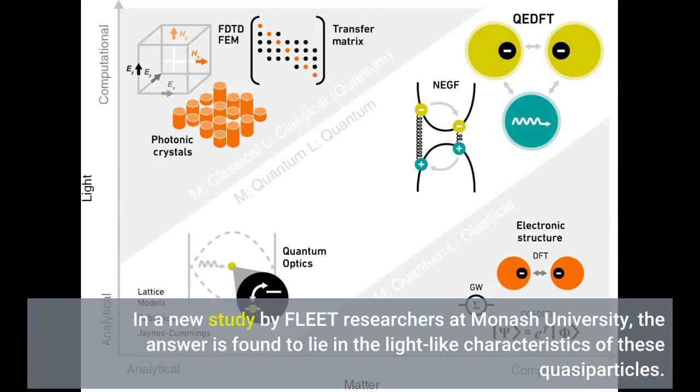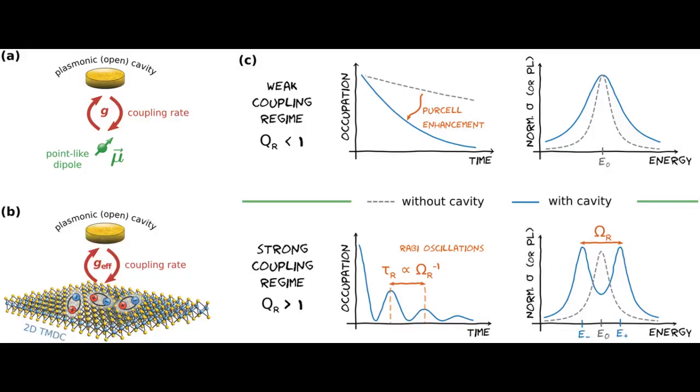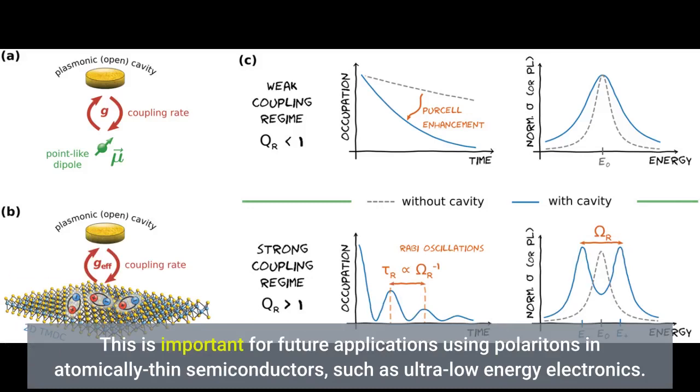In a new study by FLEET researchers at Monash University, the answer is found to lie in the light-like characteristics of these quasiparticles. This is important for future applications using polaritons in atomically thin semiconductors, such as ultra-low energy electronics.